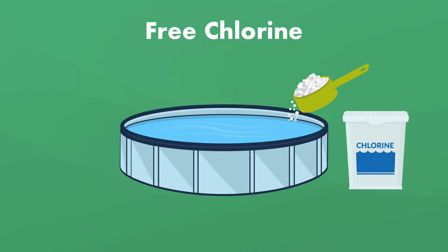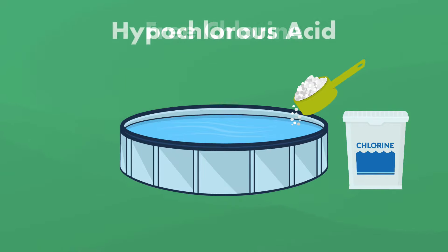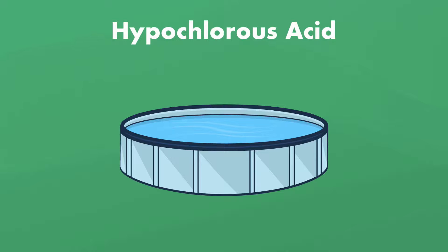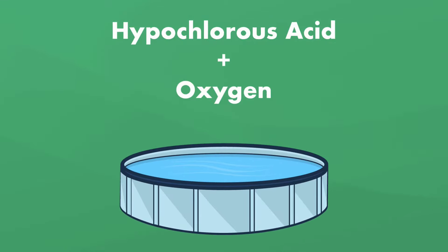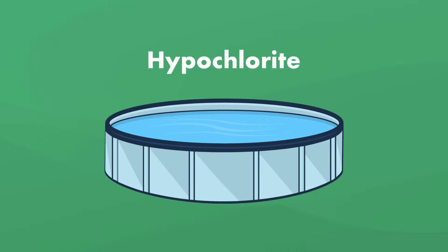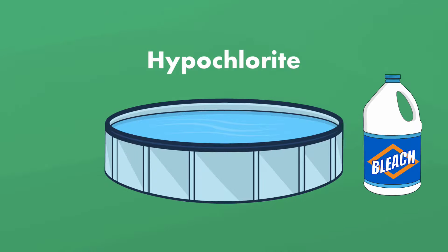When you add chlorine to your pool, it dissolves and forms hypochlorous acid. This weak acid disassociates in the water, binds with oxygen, and forms hypochlorite, an oxidizing ion. It's the same active ingredient in household bleach, and together these chemicals form free chlorine.